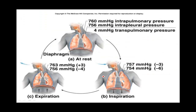When we inhale, our diaphragm flattens out, increasing the volume of our thoracic cavity. When you increase the volume of a system while maintaining the internal air, you decrease the pressure on the air inside that system. By decreasing the pressure inside our thoracic cavity to a point lower than the pressure in the air around us, we create a situation where air will move from high pressure to low pressure, meaning air moves from the outside atmosphere into our lungs.